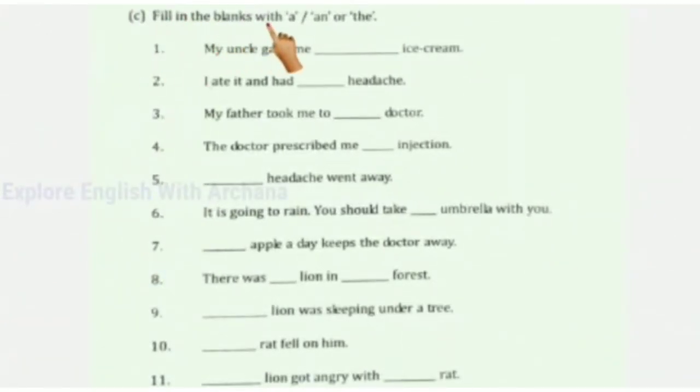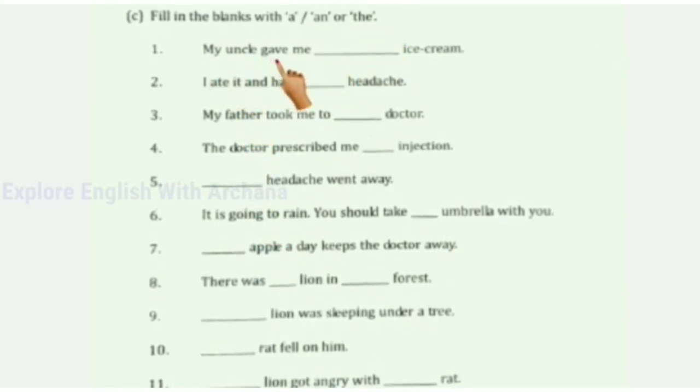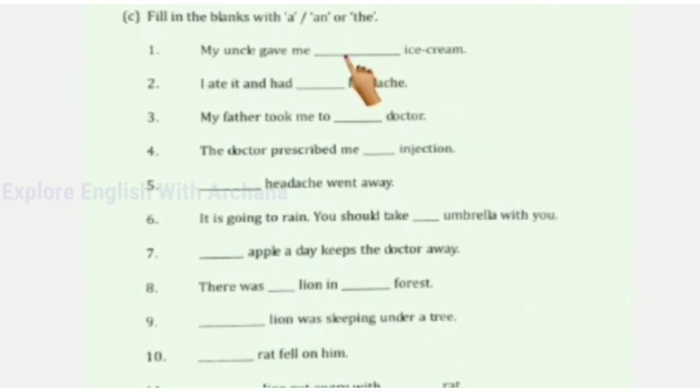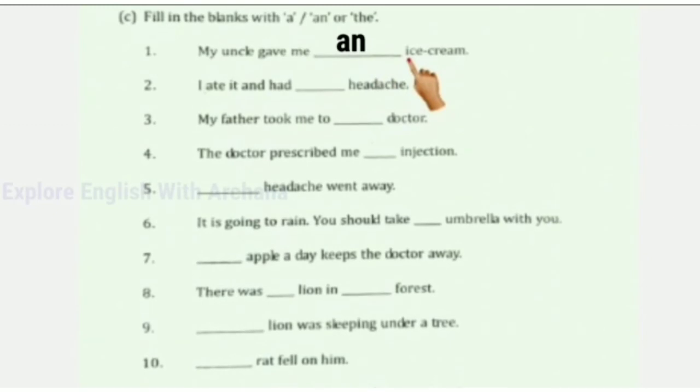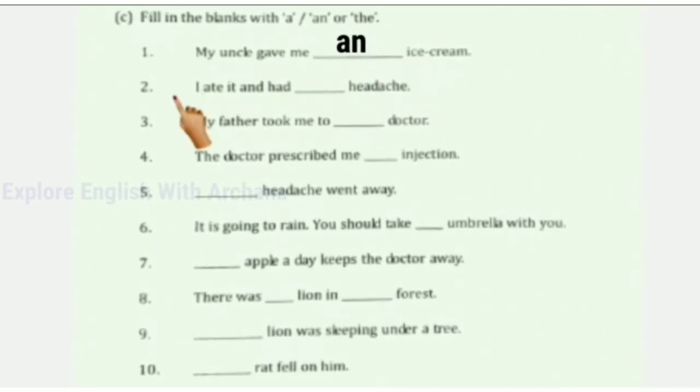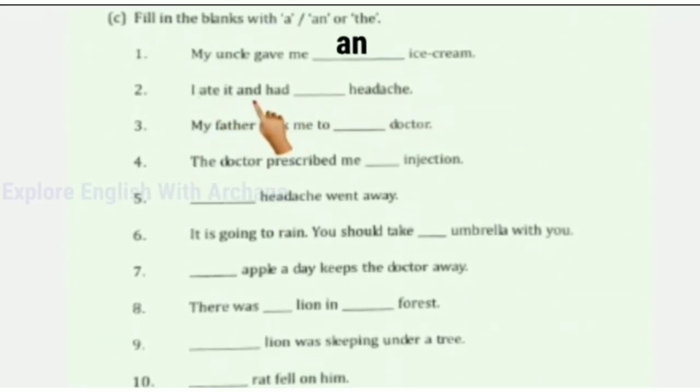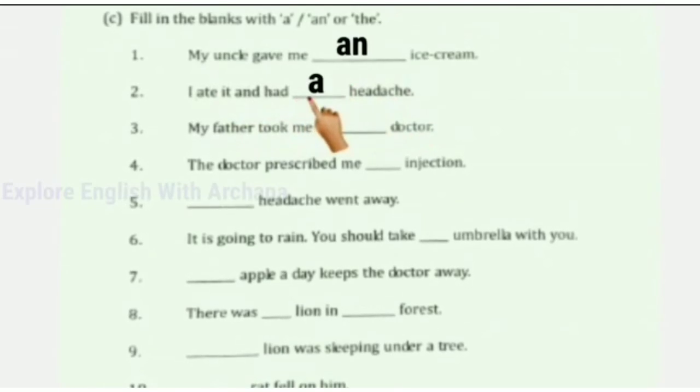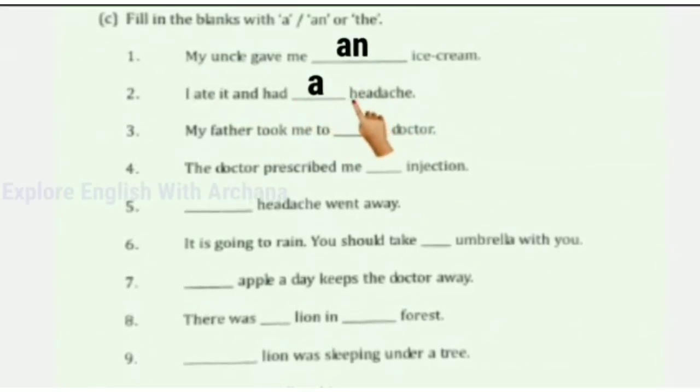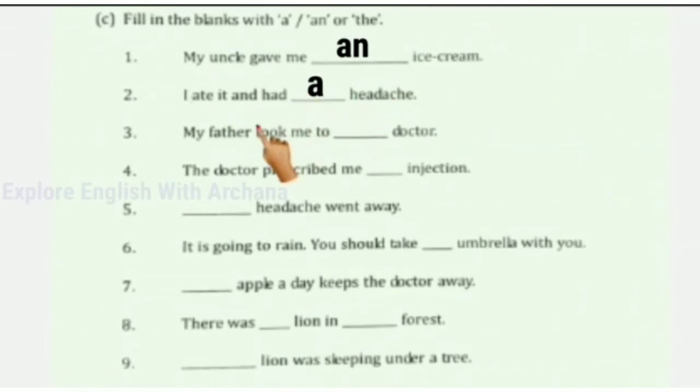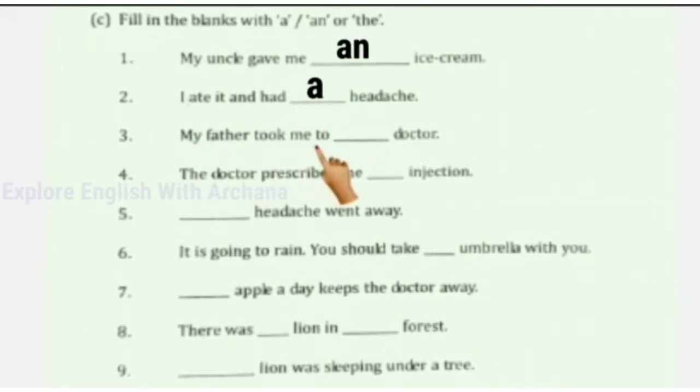Fill in the blanks with a, an, or the. My uncle gave me an ice cream. Ice cream starts with I, which is a vowel. Number two: I ate it and had a headache. H is a consonant, so 'a headache'. My father took me to a doctor.